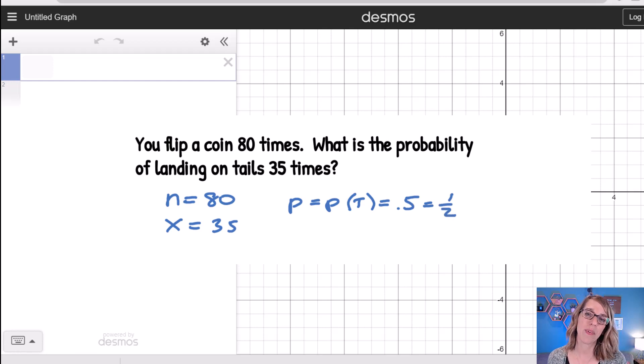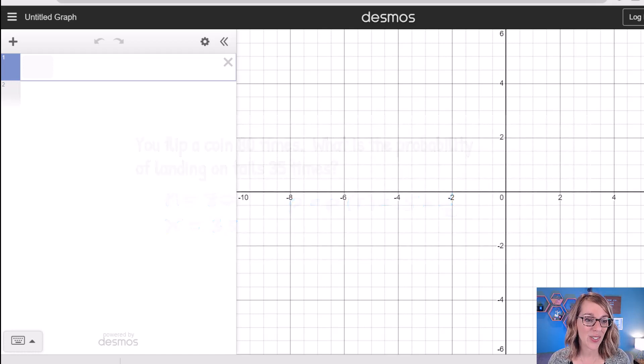I know this is a binomial probability because that probability 0.5 stays the same with every single flip, and I've only got two possible outcomes. Let's put this into Desmos.